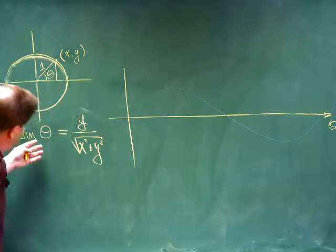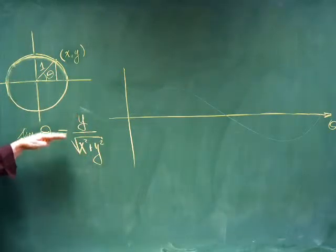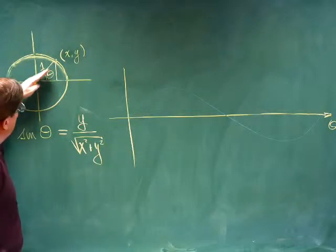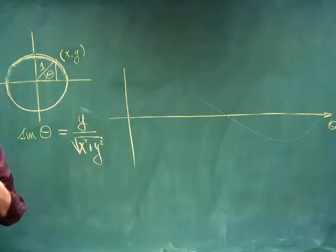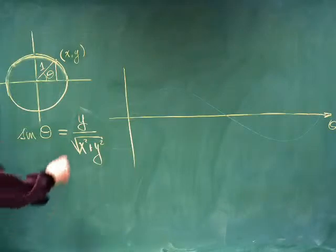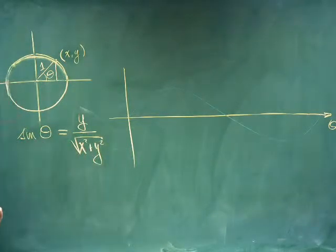We know that we generalize the sine of theta to be the opposite over the hypotenuse. If we're thinking of looking at the terminal side of the angle and we think of some point x,y, then the opposite side would be the y value and the hypotenuse would be x squared plus y squared.